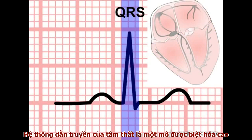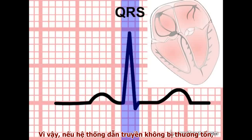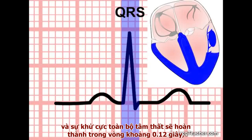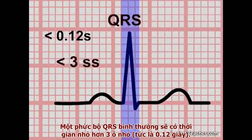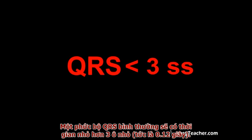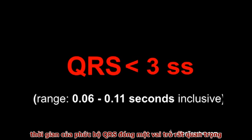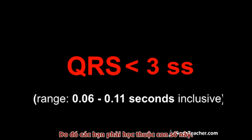The conducting system of the ventricles is highly specialized tissue capable of transmitting the depolarization wave rapidly around the chambers. With an intact conducting system, depolarizing current is delivered to all sectors of the ventricles in a very short time period, and ventricular depolarization of all regions is complete within 0.12 seconds — that is, three small squares. A normal QRS complex is less than three small squares in width. The width of the QRS complex is absolutely central to the ECG interpretation of life-threatening arrhythmias. You must remember this number.